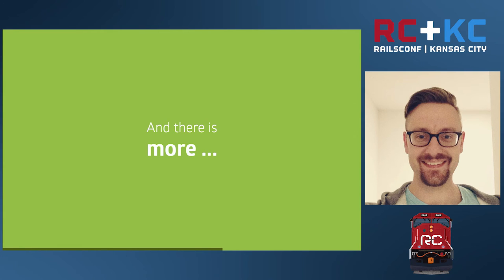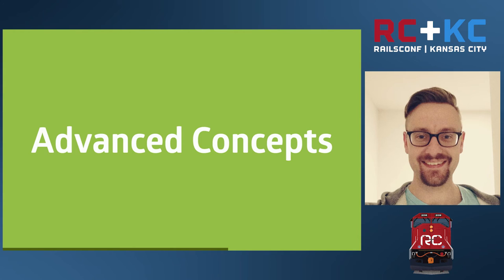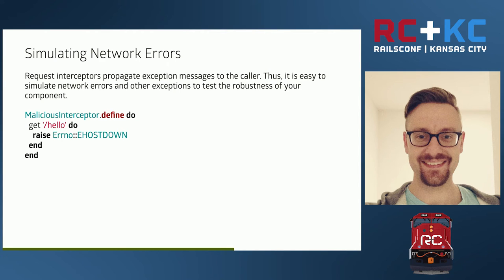There are also features I'm not sure you could simulate with WebMock or VCR. A big one for me is simulating network errors. Request Interceptors are set up to propagate exceptions raised in one of the endpoints — I specifically disabled Sinatra's functionality to handle exceptions, allowing them to propagate through the entire stack. This allows you to simulate that a host is unreachable simply by raising the appropriate exception, making it very easy to test whether your application is robust enough to handle these error cases.